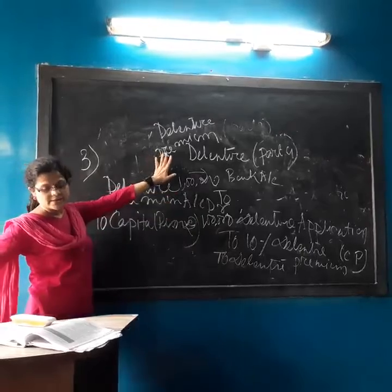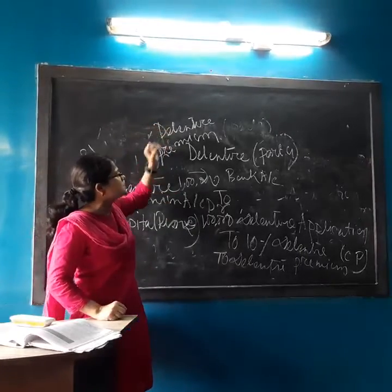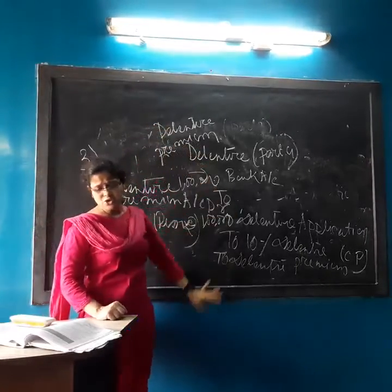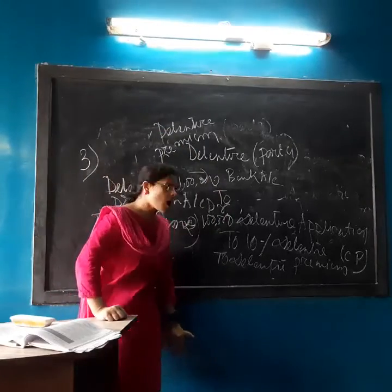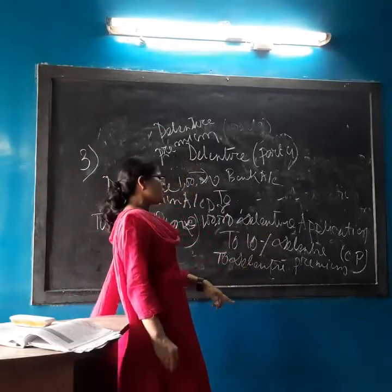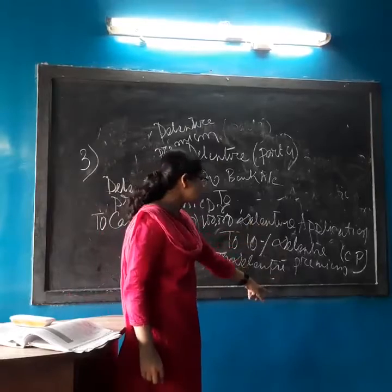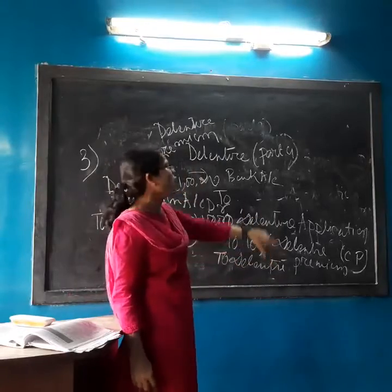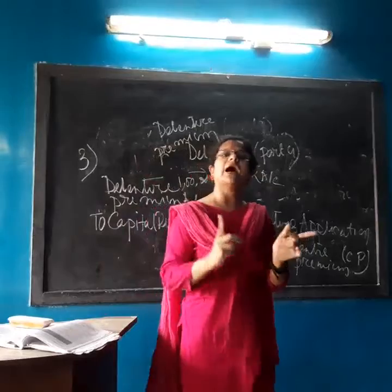Let us go through the journal entries again. The first entry: Bank Account debit to Debenture Application Account. The second entry: Debenture Application Account debit to 10% Debenture Account, and to Debenture Premium Account. All the calculations will be done by you.